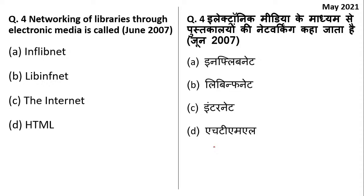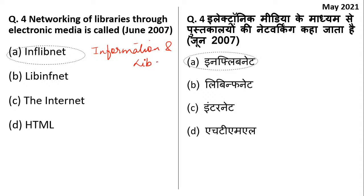Network of libraries through electronic media is called Inflibnet. The right answer is option A, and this question was asked in UGC NET 2007. In my lectures I try to take previous year's questions because they are very helpful and questions might get repeated. Inflibnet stands for Information and Library Network. The center is located in Gujarat, Gandhinagar.